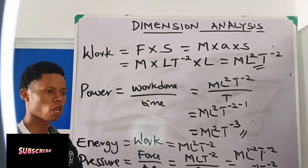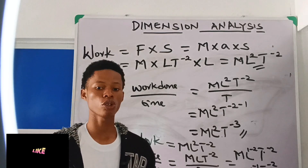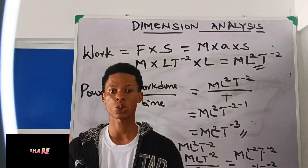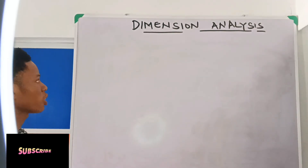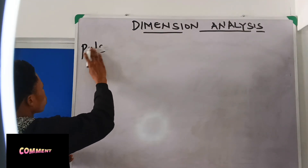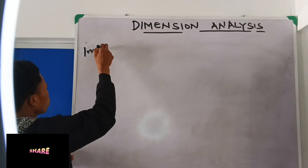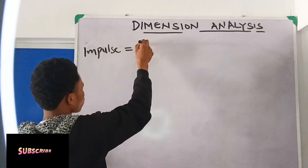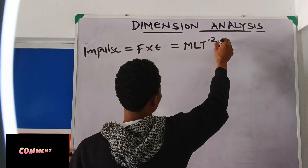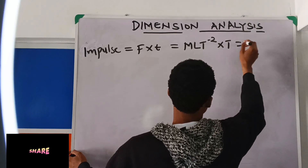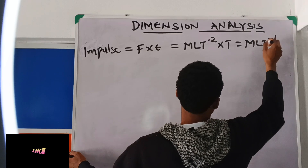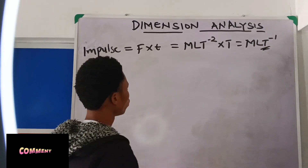Basically, you just know the formula and go about the manipulation. One more example: if you are asked to find the dimension of impulse, impulse is force times time. Force is MLT⁻², then times T¹. Subtracting powers: T⁻²⁺¹ = T⁻¹. So the dimension of impulse is MLT⁻¹.